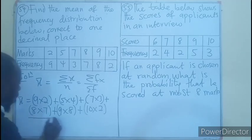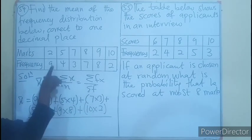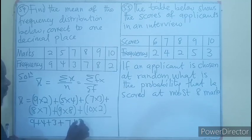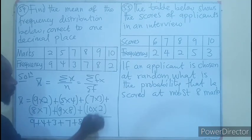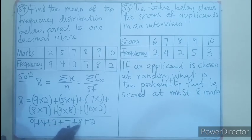Divided by, so I'll divide all this value by the sum of the frequency. So 9 plus 4 plus 3 plus 7 plus 8 plus 2.